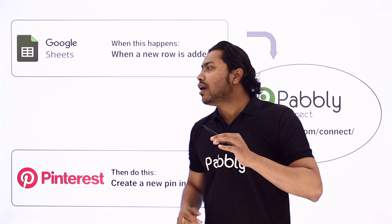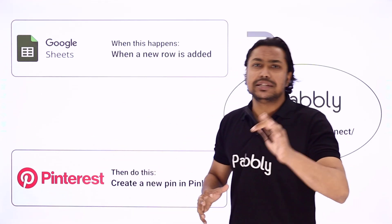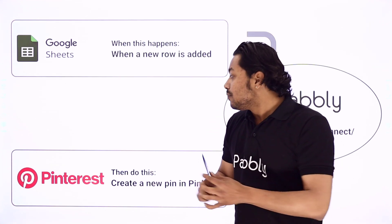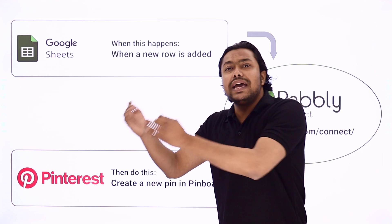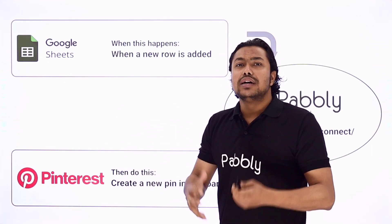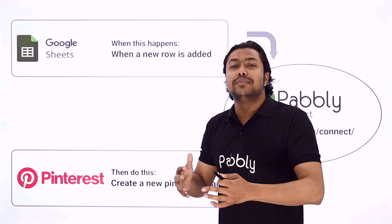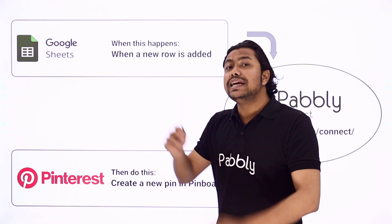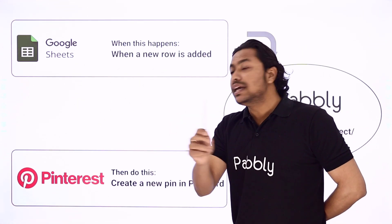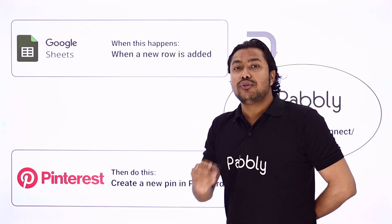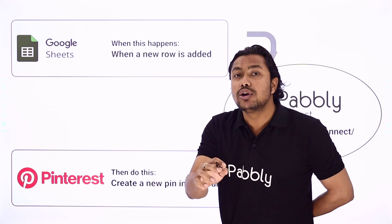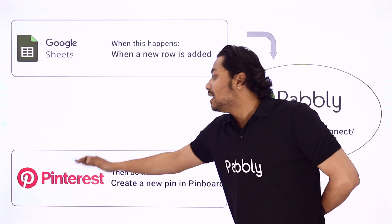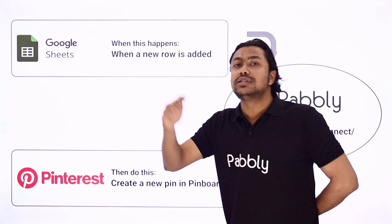Why do you need this? Imagine you are going on a holiday, vacation, or a work trip. You cannot access your Pinterest account again and again — you will be involved in work or enjoying your vacation with friends or family. In that case, you can integrate your Google Sheets with Pinterest, and whenever a new submission is made into Google Sheets, a new pin will be submitted to your Pinterest account — without sharing your Pinterest ID and password with anyone.